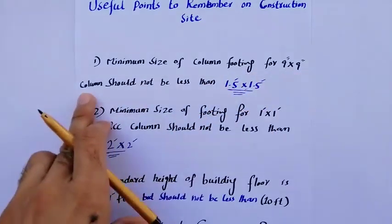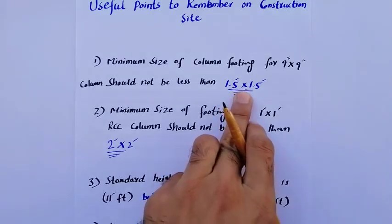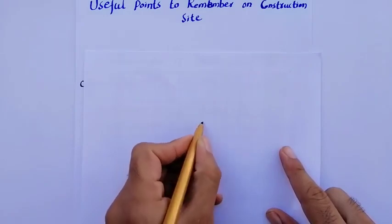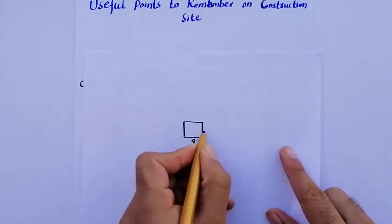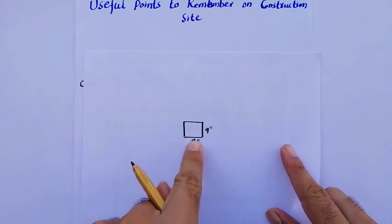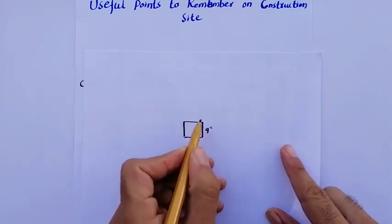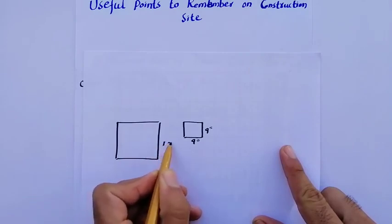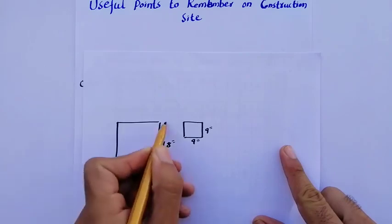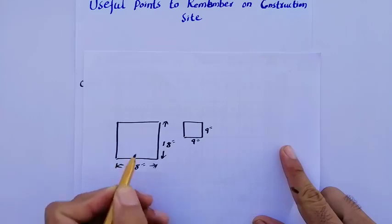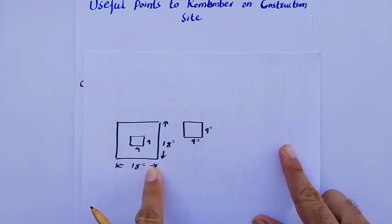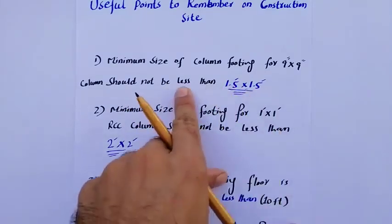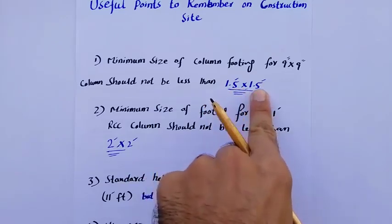First point: the minimum size of the column footing for a 9 by 9 inch column should not be less than 1.5 feet by 1.5 feet. For example, if the size of the column is 9 inches by 9 inches — a square column — the minimum footing size to use is 1.5 by 1.5 feet, which means 18 inches by 18 inches.